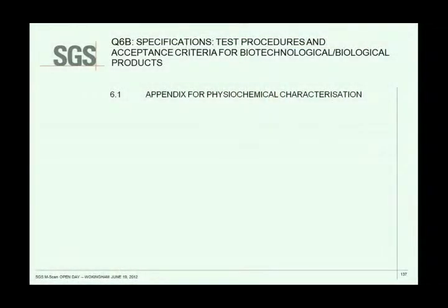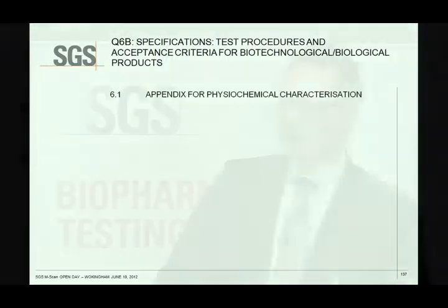Fortunately for us, there is a guideline that's been mentioned a few times today already — it's the ICH Topic Q6B. ICH is the International Conference on Harmonization. The FDA, the European Medicines Agency, and the Japanese FDA, which are the main Tier 1 regulators, got together and defined the specifications and things you should think about when characterizing a biological product.